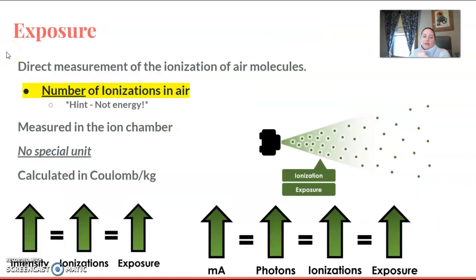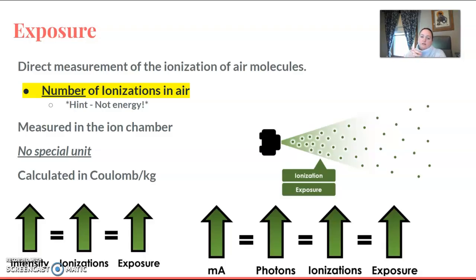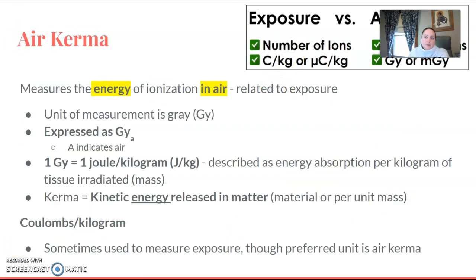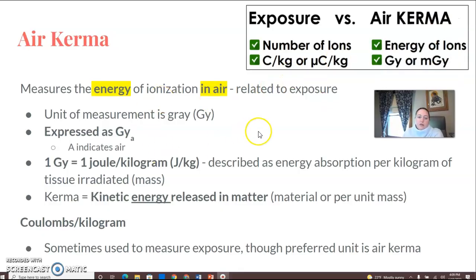Exposure is a direct measurement of the ionizations in air molecules — it is the number of ionizations in air, not the energy. It's measured at the ion chamber and calculated in coulombs per kilogram. There is no special SI unit for exposure. If you increase intensity, you increase ionizations and increase exposure. Similarly, increasing mA increases the number of photons, which increases ionizations and increases exposure.